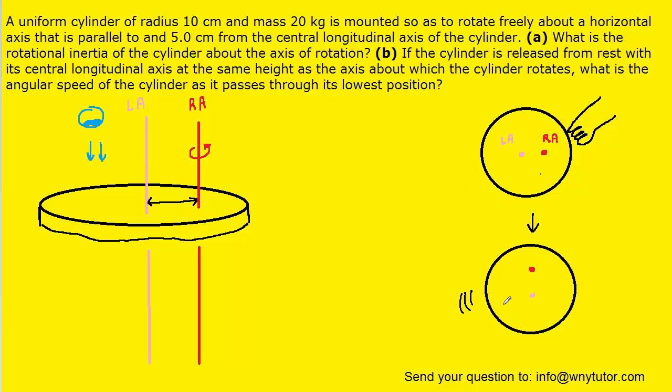And so now the disc is actually, or the cylinder is actually spinning, and we can see that the longitudinal axis has fallen a distance, and actually that distance previously in the problem we called capital H. And so as the longitudinal axis falls a distance H, there's going to be a conservation of mechanical energy. So let's look at that equation.